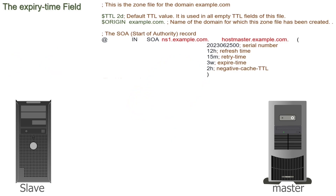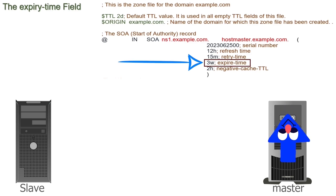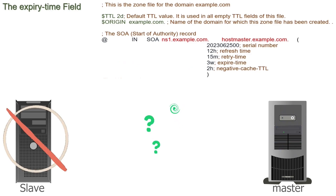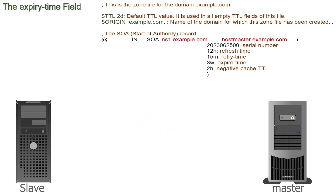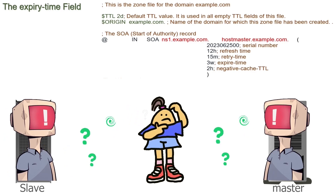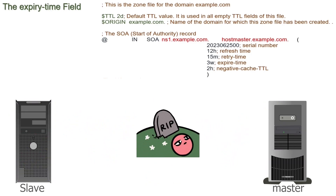A slave name server resolves queries for the zone when the master name server is down. It resolves queries for the domain until the master is up or the expiry is reached. After the expiry, it does not resolve queries for the domain. At this point, since both the master and the slave name servers are not resolving queries, the zone is considered dead.